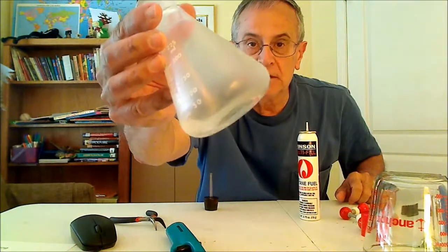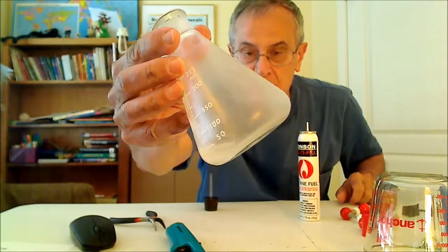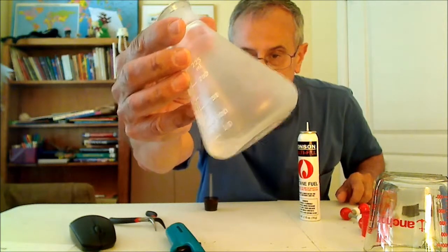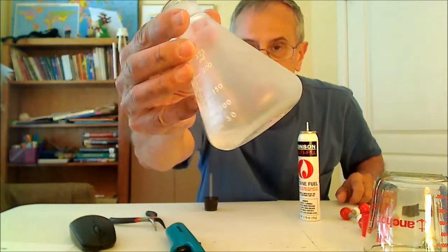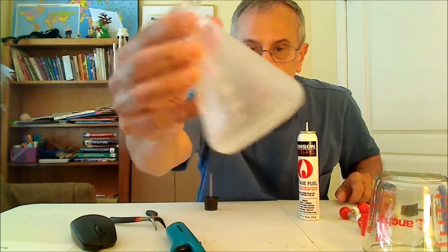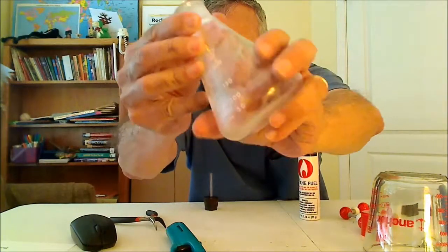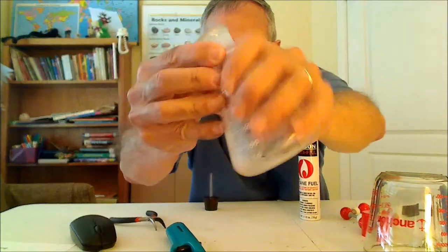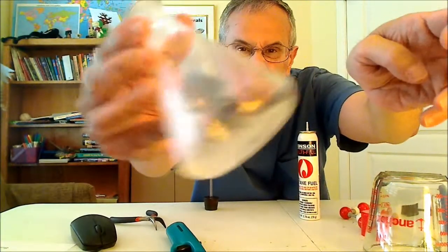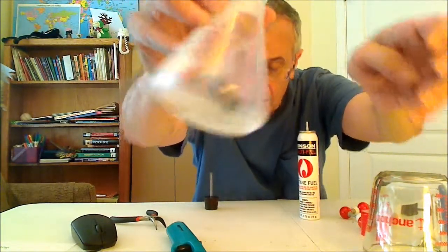You can see the liquid. Now it's spontaneously boiling. And as it boils, it cools until it reaches its normal boiling point, minus 0.5 degrees Celsius. It's so cold that it's condensing water from the atmosphere. That's just water vapor on the outside, but you can see the boiling liquid in there. It's very cold.